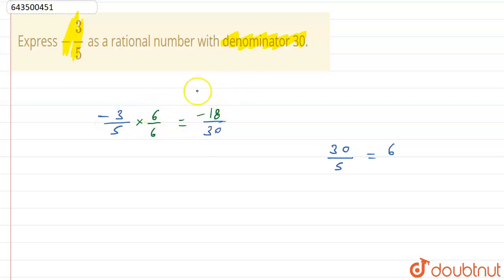So this will come out to be minus 18. 3 times 6 is 18, and plus into minus is minus, so minus 18 upon 30. And now we have expressed our rational number minus 3 by 5 as minus 18 by 30.